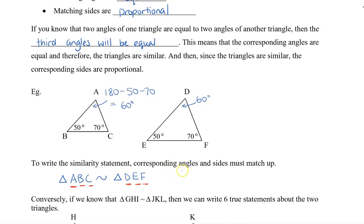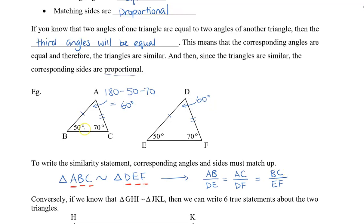Now that we know that the triangles are similar, then we can also say that the corresponding sides are proportional. So that means side AB divided by side DE is equal to side AC divided by side DF, which is equal to side BC divided by EF. So these are all fractions, and we write them as fractions so that we can say they are equal and use them to solve for missing side lengths.